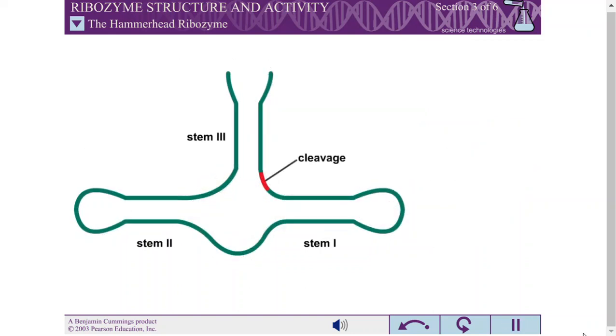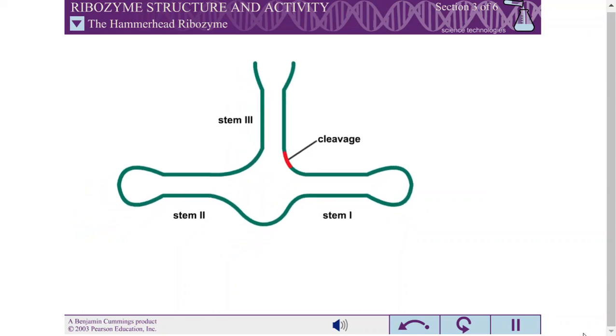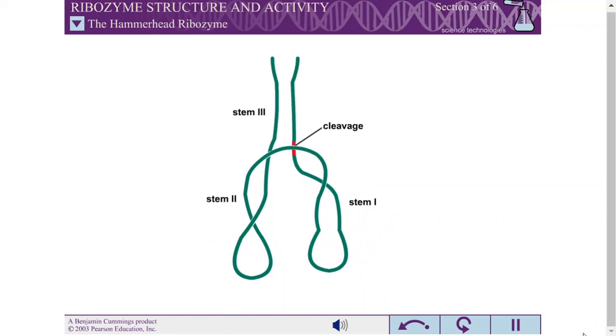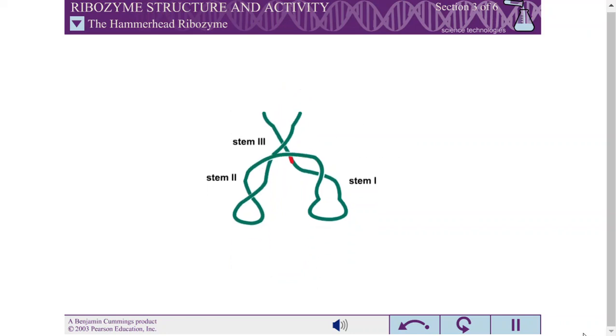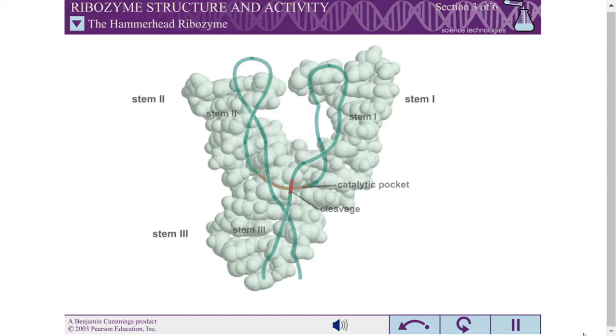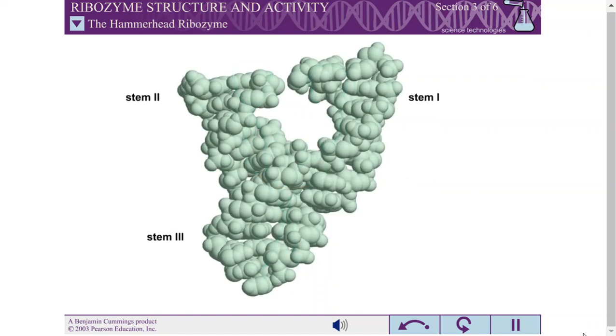In the tertiary structure of the hammerhead ribozyme, the cleavage site is positioned within the catalytic pocket. This orientation is necessary so that the magnesium ion bound in the catalytic pocket can catalyze the cleavage reaction. Note, this animation is meant to aid you in understanding the tertiary structure of the hammerhead ribozyme. It is not meant to represent the biological mechanism of ribozyme folding.